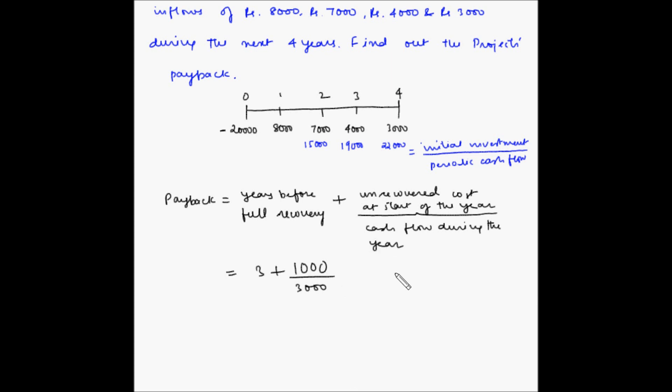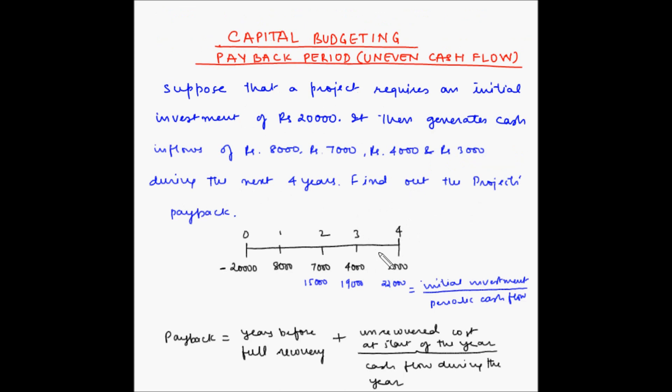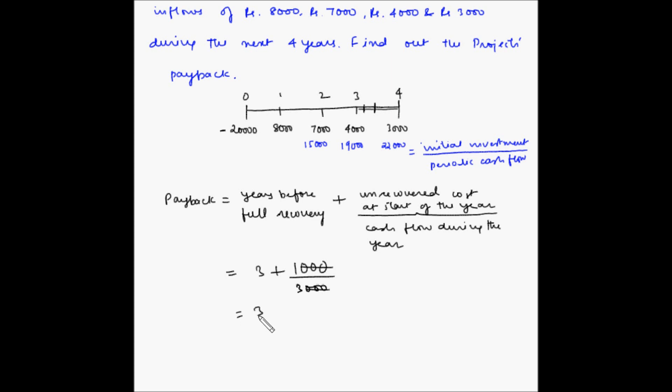The assumption is that the cash flow during each of these years comes in evenly. So this 3,000 is coming in evenly throughout the year. If we take the cash flow at half year, it will be half of the total, which is 1,500. The cash flow at one-fourth of the year will be one-fourth of the total cash flow, which is 750 rupees and so on. This becomes 3 plus 1 by 3, which is 3.33 years.